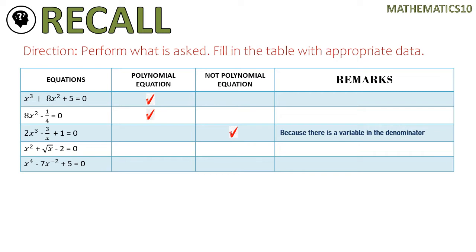For number four, it is not a polynomial equation because there is a variable inside the radical sign. Going back to the basic concept: if the variable is inside the radical sign, for example square root of x, that term can be written as x raised to one-half. So the exponent is a fraction. If you rewrite square root of x, it is x raised to one-half, and therefore it is not considered a polynomial because the exponent is a fraction.